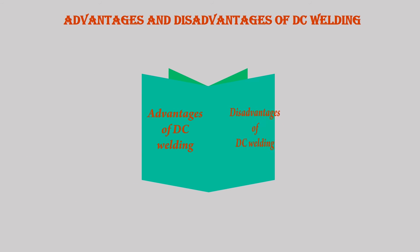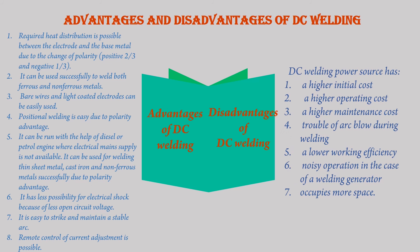Advantages and Disadvantages of DC Welding: 1. Required heat distribution is possible between the electrode and the base metal due to change of polarity — positive 2/3 and negative 1/3. 2. It can be used successfully to weld both ferrous and non-ferrous metals. 3. Bare wires and light coated electrodes can be easily used. 4. Positional welding is easy due to polarity advantage. 5. It can be run with a diesel or petrol engine where electrical main supply is not available. It can be used for welding thin sheet metal, cast iron, and non-ferrous metals successfully due to polarity advantage.